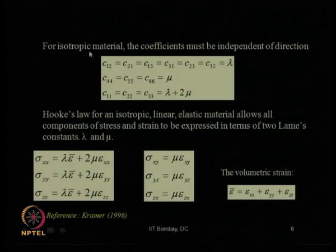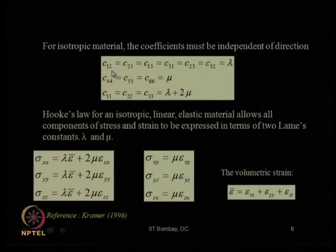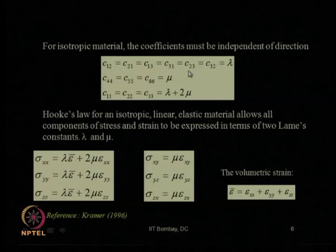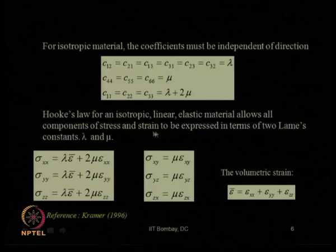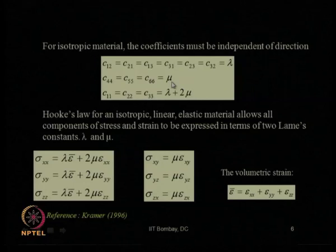Coming to today's lecture: for any isotropic material, which has similar properties in all x, y, z directions, the coefficients must be independent of direction. In the stiffness matrix, c12 = c21, c13 = c31, c23 = c32, and they all equal lambda — one of Lamé's constants. The stress-strain relationships can be expressed in terms of two Lamé's constants, lambda and mu. The diagonal elements c44, c55, c66 equal mu, while c11, c22, c33 equal lambda + 2mu.